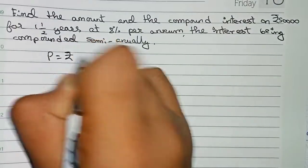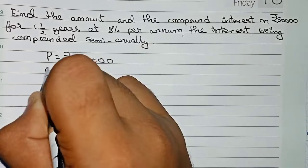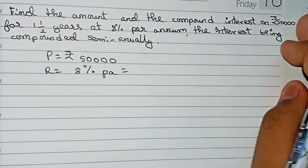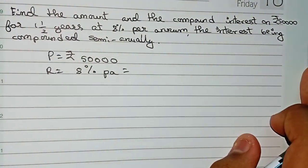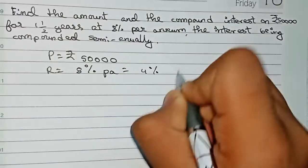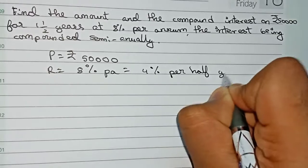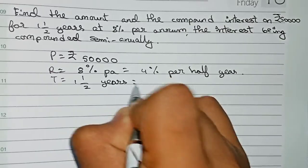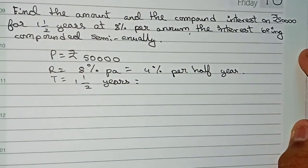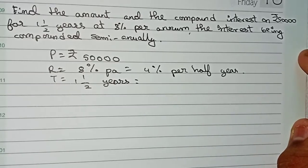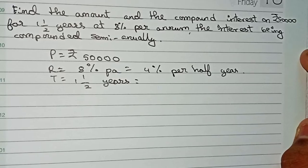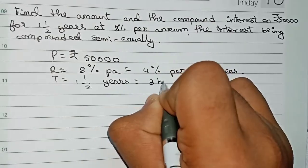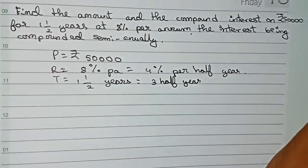First, write the principal as given: fifty thousand. The rate of interest is given as eight percent per annum. Since the interest is compounded semi-annually, the rate will become half, that is four percent per half year. The time is one and a half years, which semi-annually means we express it in terms of six-month periods — one year equals two half-years, plus one more, giving three half-years.